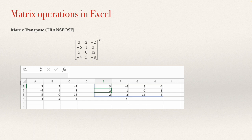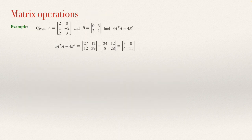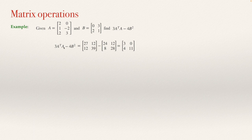Finally, I want to show how to save time when you have several operations. This is when you really see the benefit of Excel. For example, an operation we already solved by hand: if A and B are matrices, then 3 times the transpose of A multiplied by A, minus 4B squared, equals the matrix with entries 3, 0, 4, 11. We spent some time doing that by hand. Let's see how to do it in a computer.